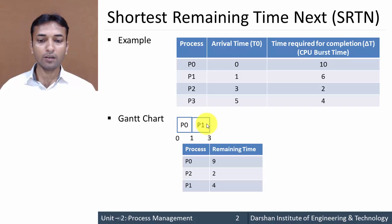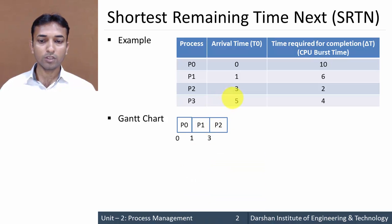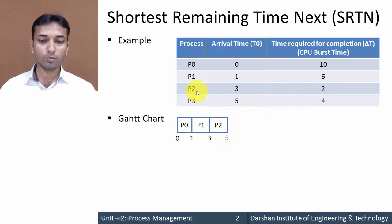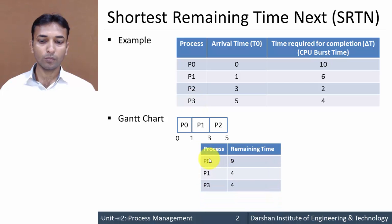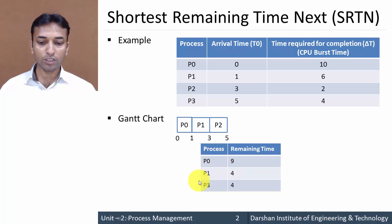P1 is forcefully stopped and the next turn is for process P2. P2 requires two milliseconds, so from three milliseconds it runs until five milliseconds, at which point P2 is completed. At five milliseconds, a new process P3 arrives. Now three processes are in the queue: P0 requires nine milliseconds, P1 requires four milliseconds remaining, and P3 is a new process requiring four milliseconds.